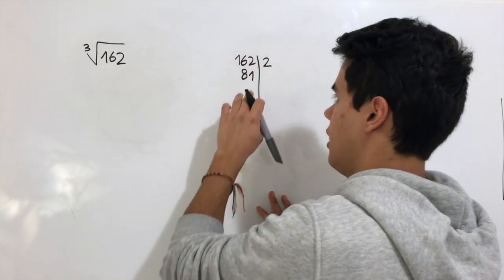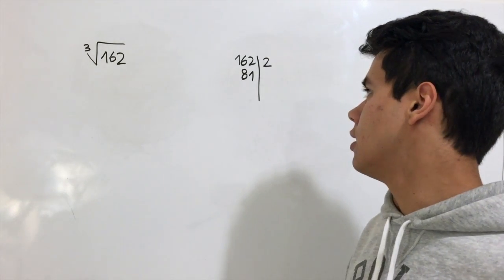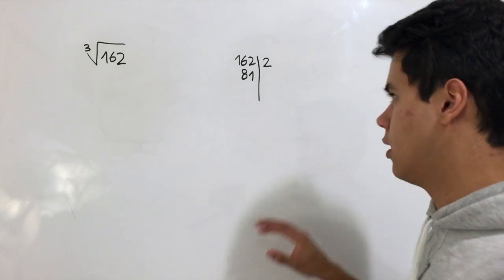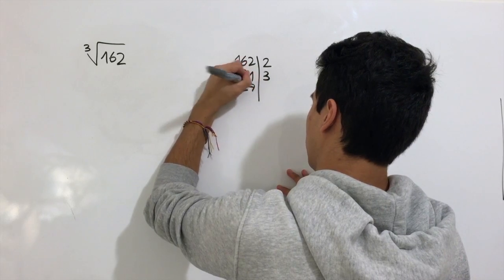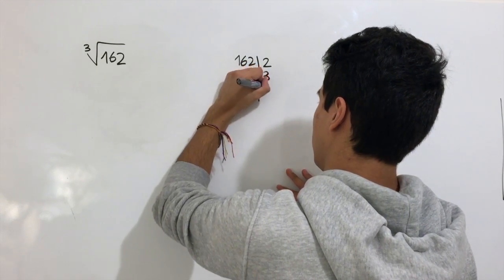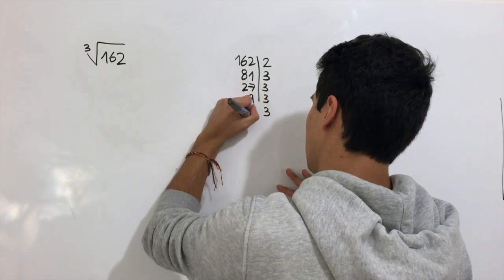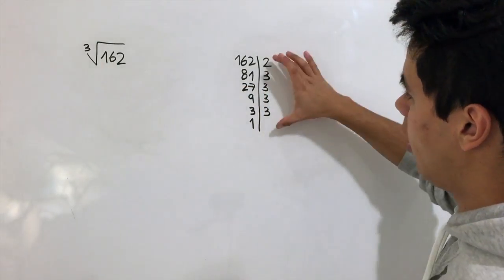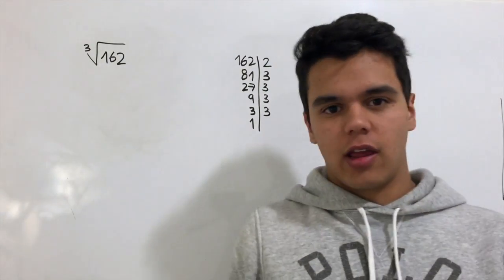81. When we add these 2 numbers, it's 9, which is a multiple of 3, so we can divide it by 3. 9 divided by 3 is 3, and divided by 3 again is 1. When we multiply all these numbers together, we're going to end up with 162.